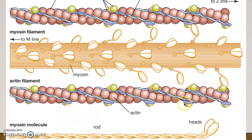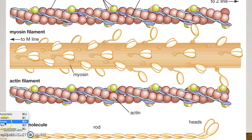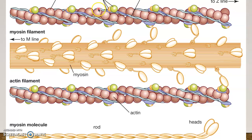Let's talk about muscle contraction. I'm going to use an analogy — in this analogy, I represent troponin. Troponin are proteins attached to a longer fibrous protein called tropomyosin. These proteins called actin — this represents my daughter.